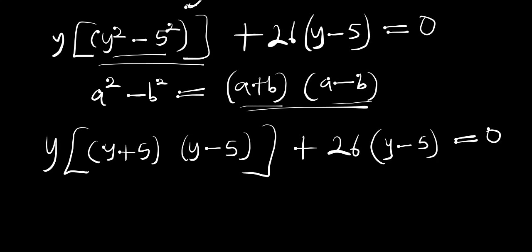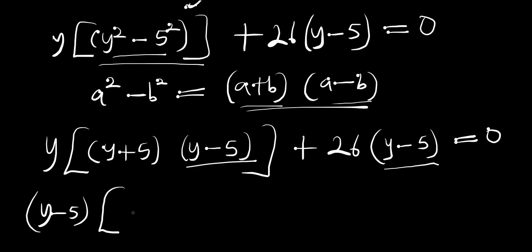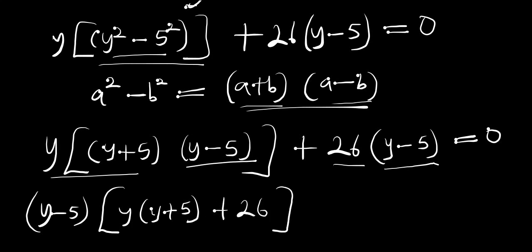So what we are going to do next is to factor out the common terms. Here we have (y - 5) and here we have (y - 5), so we can factor that out: (y - 5) times (y(y + 5) + 26) = 0, which gives us (y - 5)(y² + 5y + 26) = 0.